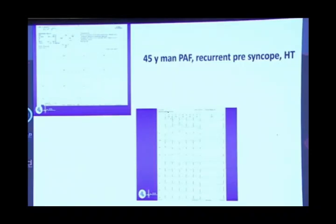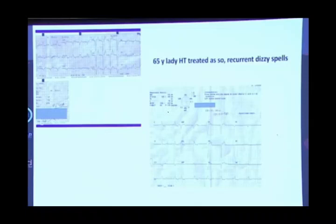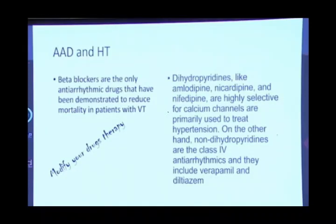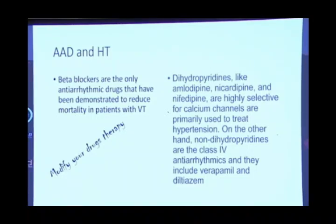Another example of bradyarrhythmia — a bifascicular block degenerating into complete heart block — is a very common entity. Another case of complete heart block with hypertension: after pacing, the patient returned to normal. Regarding drug combinations with antihypertensives, modify your drug therapy when giving calcium channel blockers, beta blockers, ACE inhibitors alongside antiarrhythmic drug therapy. However, with the advances in ablation therapy and high success rates, antiarrhythmic drug therapy is less widely used nowadays in hypertensive or non-hypertensive patients. Thank you.